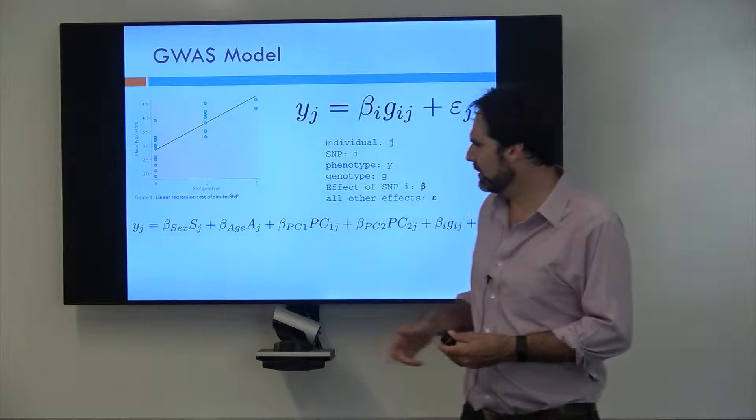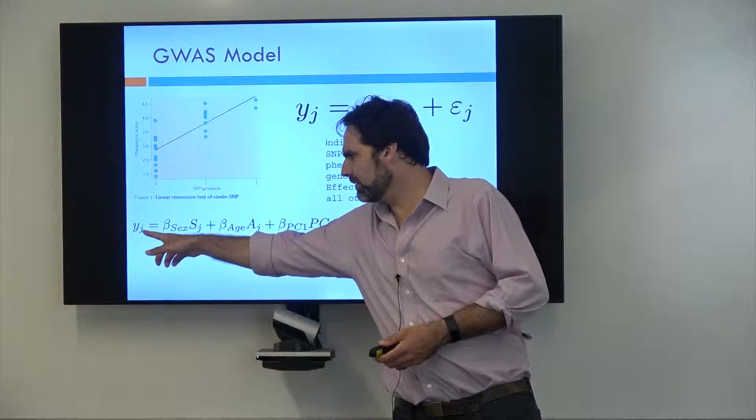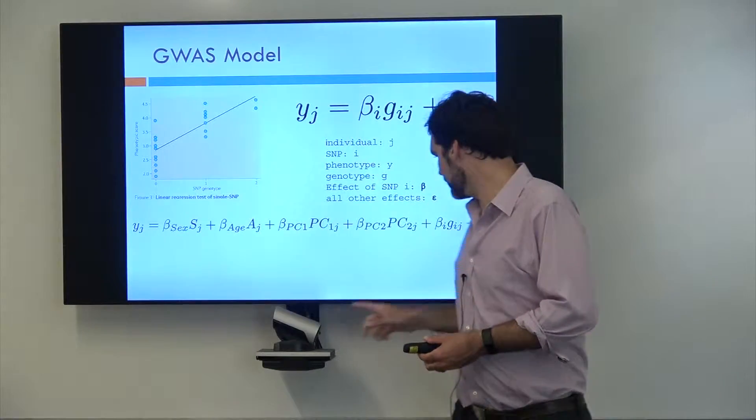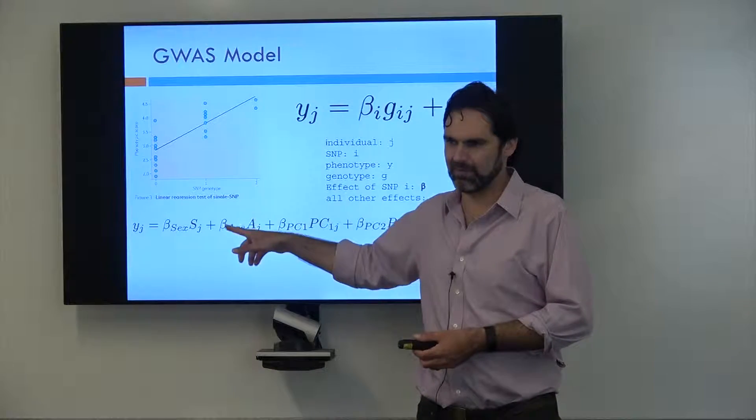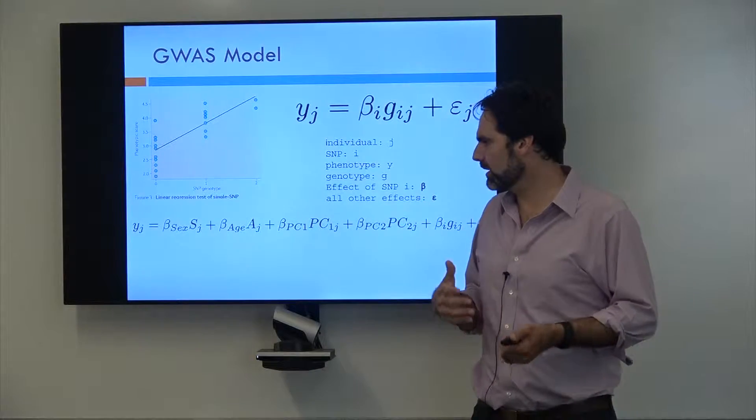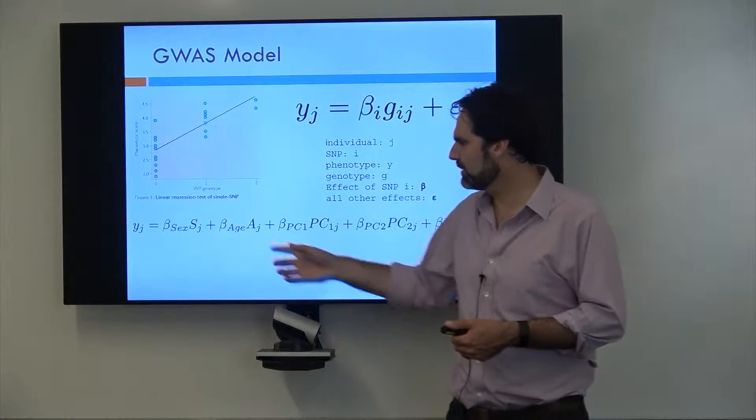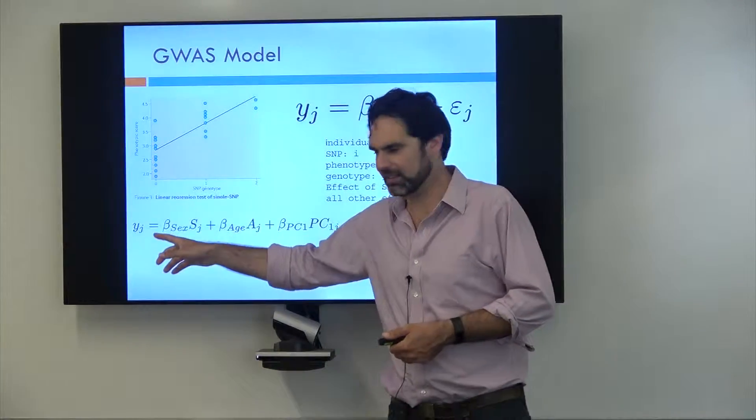Especially when young. So when we estimate for an individual how tall they are and we're trying to figure out the effect of genetics, we want to take out the effect of age. Also, girls tend to be a little shorter than boys, so we also want to take out that sex difference.